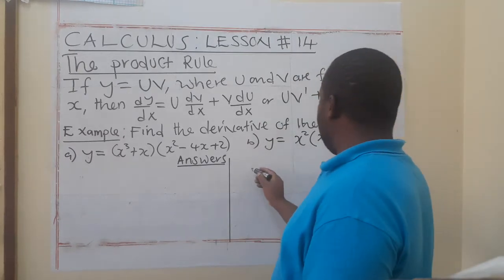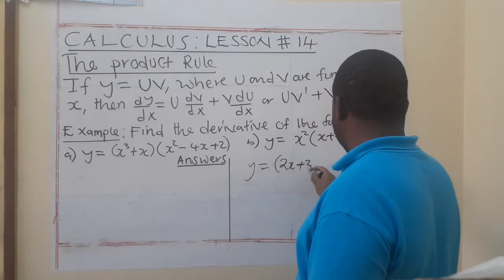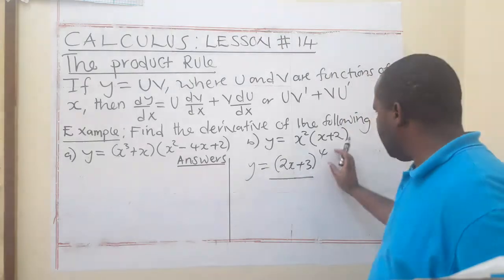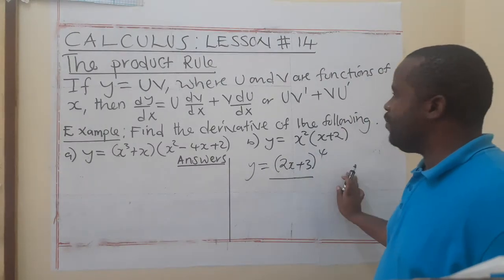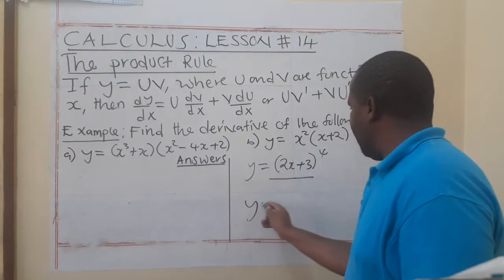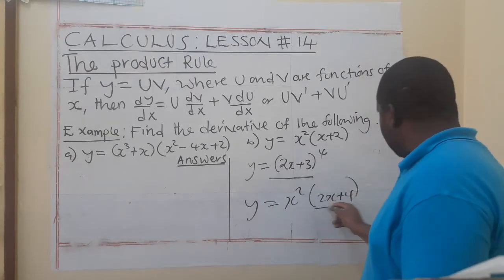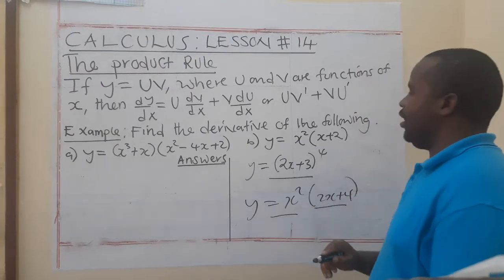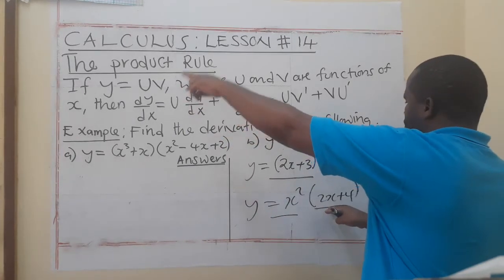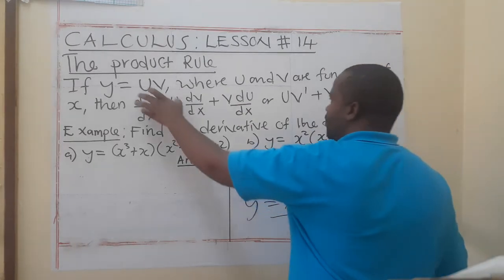What we are saying is that if you have a function like y = (2x + 3)⁴, you will think of the chain rule because you just have a power and there's only one function. But if you have two functions — for example, y = x² multiplied by (2x + 4) — this is a function on its own, and that is a function on its own. Because we are multiplying these functions, we use the product rule.